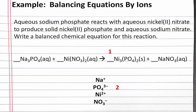If we balance our phosphate, we have 2 phosphate on the right. And to get 2 phosphate on the left, we'll need 2 sodium phosphate.